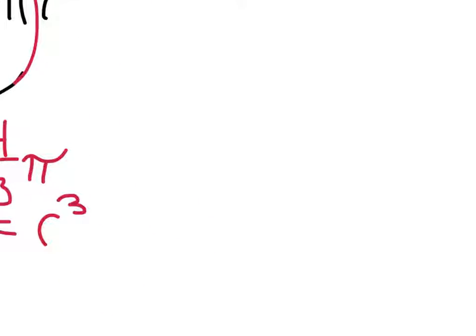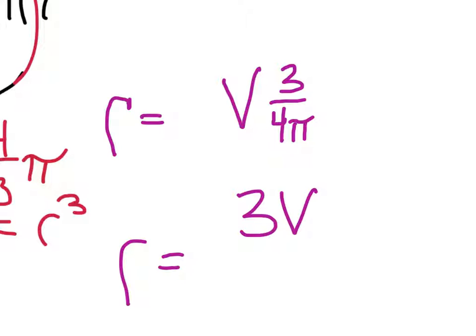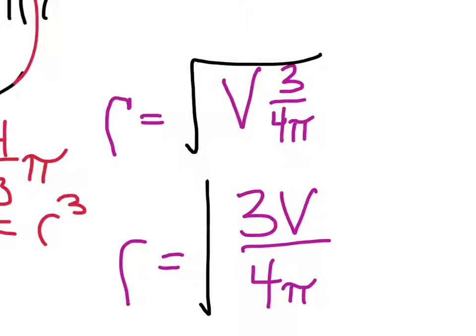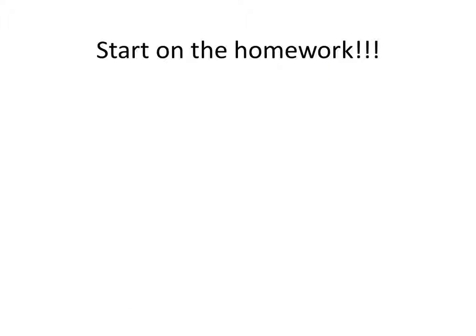When this is all said and done, what you end up with is the radius is volume times 3 divided by 4 pi, right here. Now, let me write this another way. You've got 3 times the volume divided by 4 pi. What you've got to do is take the cubed root of this. How do you do the cubed roots without a calculator? You've got to think really hard.